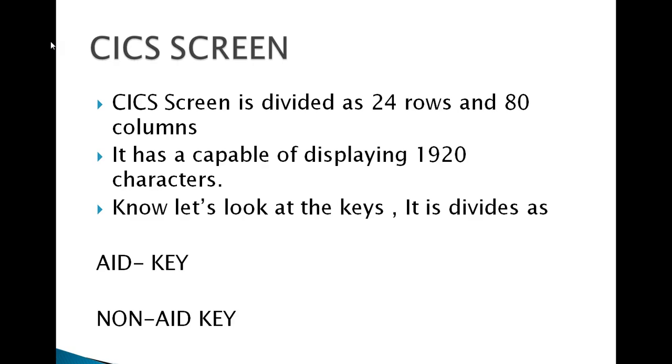The CICS screen is divided as 24 rows and 80 columns. This is the maximum number of rows and columns that you can code on the screen or display anything onto the screen. It has the capability of displaying 1920 characters at maximum, the same way you're seeing characters here on the CICS screen.